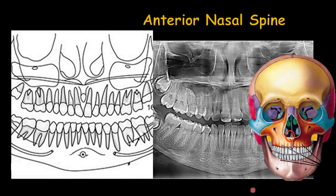Beneath the nasal septum, you can see the anterior nasal spine, which is a bony projection between the two parts of the maxilla where they join together. You can see it in this panoramic radiograph as an opaque bone with a roughly triangular shape.